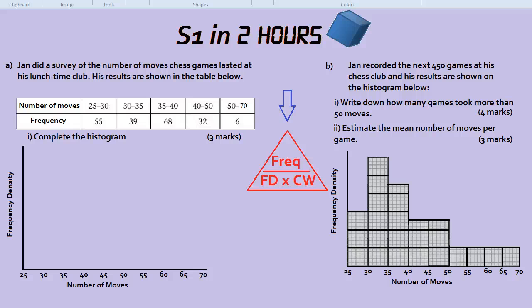The key thing to remember when you're doing histograms is to remember the histogram triangle. And it has frequency at the top, frequency density at the bottom left, which I'll explain in a minute, and class width in the bottom right. So it's frequency at the top, and then frequency density times class width beneath.